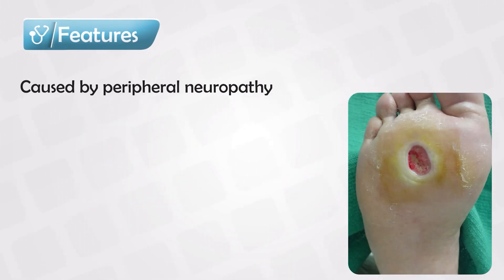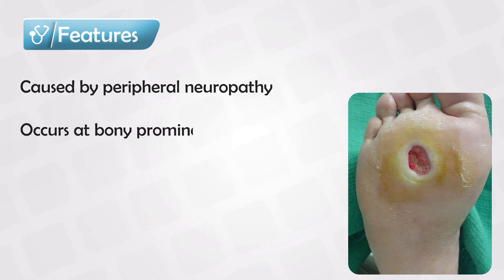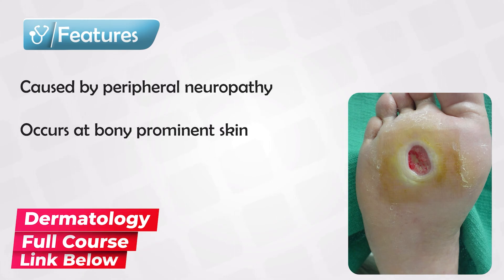Neurogenic ulcer occurs in patients who lose sensation peripherally, like an uncontrolled diabetic patient. Once they lose sensation in the periphery, especially in the extremities and toes, they can easily develop ulcers in bony areas — anywhere the bone is pressed against the skin, like the heels, the metatarsal heads, the malleoli, and sometimes the sacral area.